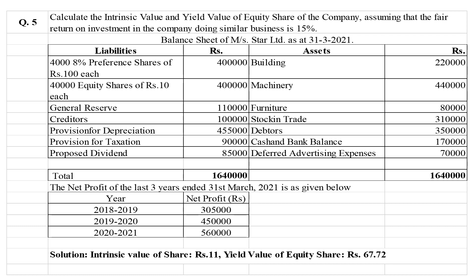In the balance sheet, on the liability side you have 4,000 eight-percent preference shares of rupees 100 each — that is 4 lakh — then 4,000 equity shares of rupees 10 each — that is 4 lakh — general reserve, creditors, provision for depreciation, provision for taxation, and proposed dividend. General reserve, equity shares, and preference shares are internal liabilities; creditors, provision for depreciation, provision for taxation, and proposed dividend are external liabilities.